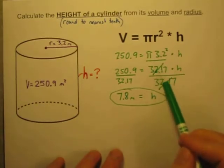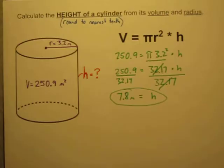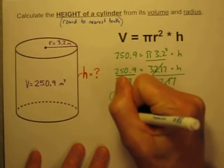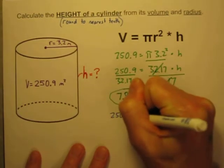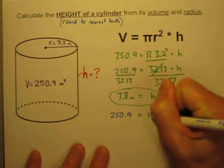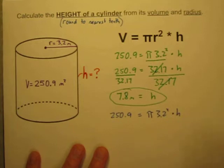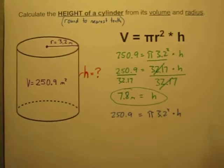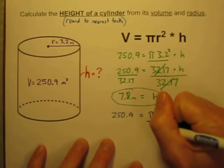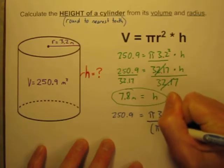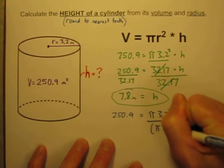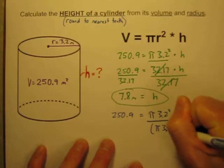Another way that you can do it, avoiding some of that rounding error. Sometimes if you round too many times, your final answer might be a tenth off. So another way that you can do that is, let's rewrite that same problem. So I'm going to do 250.9 is equal to pi times 3.2 squared times height.